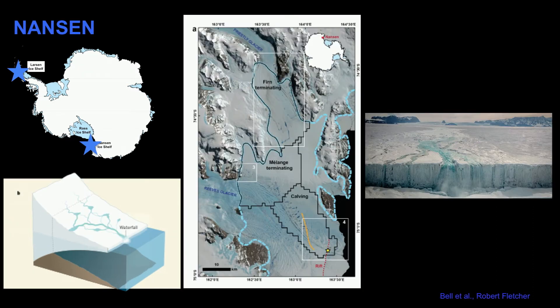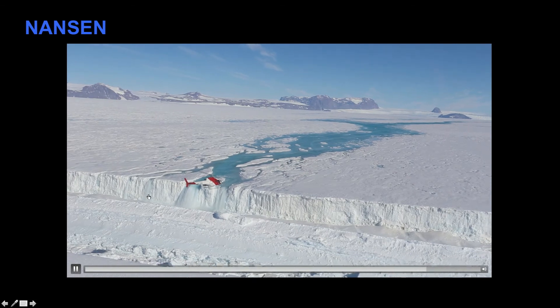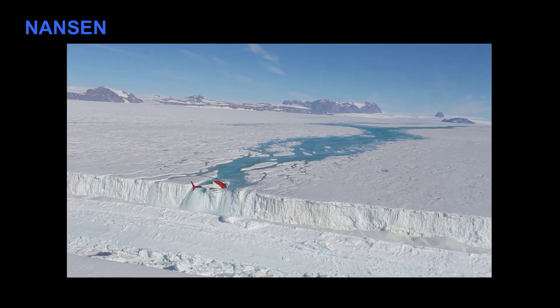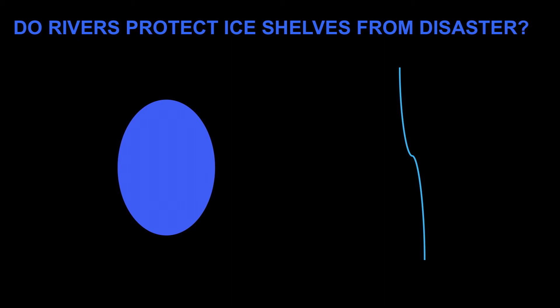More recently we've seen evidence for the other pattern: the Nansen ice shelf. In the satellite image you can see ponds similar to Larsen B, but there's also a river that runs down and transports water across the shelf, emptying into the ocean. This is a picture of what that waterfall looks like — it's very impressive. In the movie you can see the waterfall falling off the shelf, with the ocean covered in icebergs in front of it.